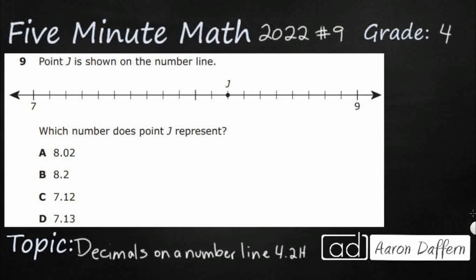So we've got point J on this number line. It looks like this number line barely has anything on there — we've got a 7 and we've got a 9. So we need to figure out what point J represents, either 8-point-something or 7-point-something. Well, we can tell visually where this 8 is. See how one line is slightly thicker than the others? That lets you know that's going to be a major boundary number, and obviously what comes between 7 and 9 is going to be 8.